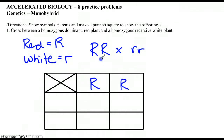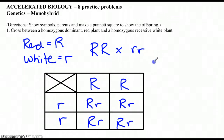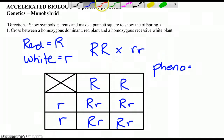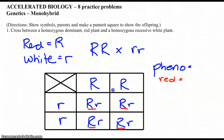The first parent goes on top and the second parent goes on the side — you'll get the same results if you mix that up. Put the capital letter first, then fill in all the boxes. So looking at phenotype — we look at the first letter of each box. My symbol for capital R is red, and all four offspring are going to be red. None will be white, even though they are carrying the recessive trait white. So my phenotypic ratio is four to zero.